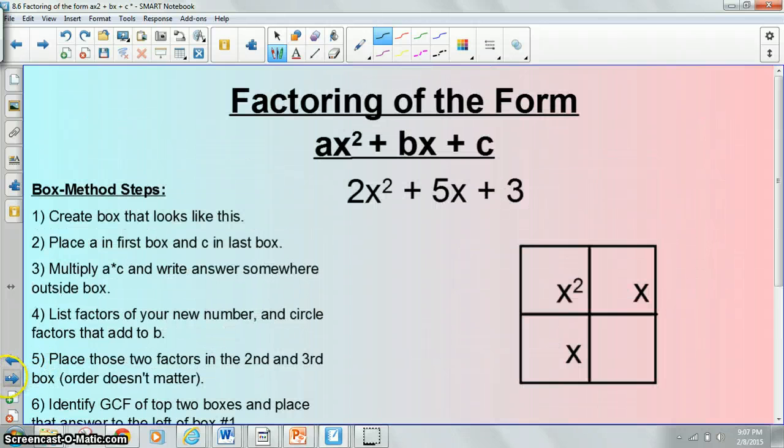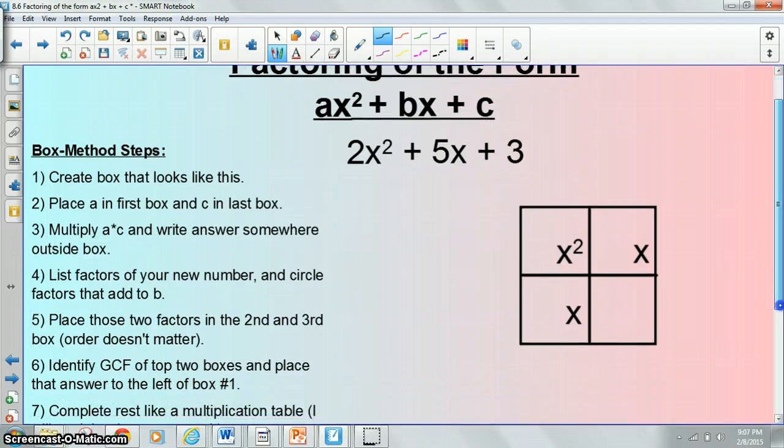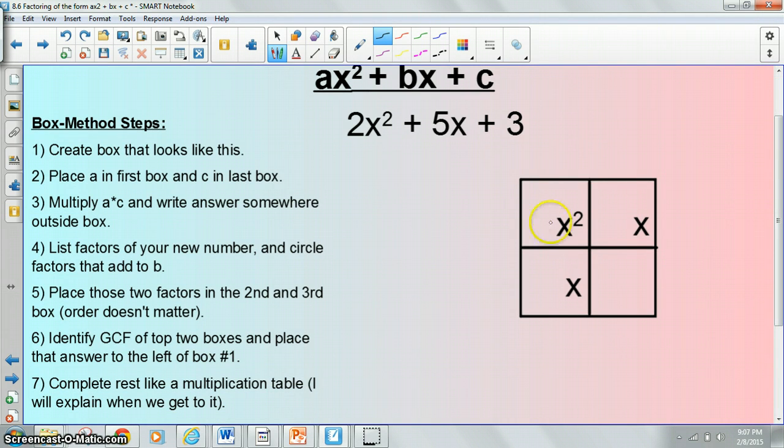I do want to show you one bad example or a more difficult example at least. 2 goes here, 3 goes here. Multiply and you get 6. You get 2 and 3 and 1 and 6. Well, bummer. Both of these could possibly get you to 5. I'm going to go ahead and choose the wrong one. I don't expect you guys to be able to tell which one is right and which one is wrong. I'm going to go ahead and choose the wrong one and then show you guys what would happen.